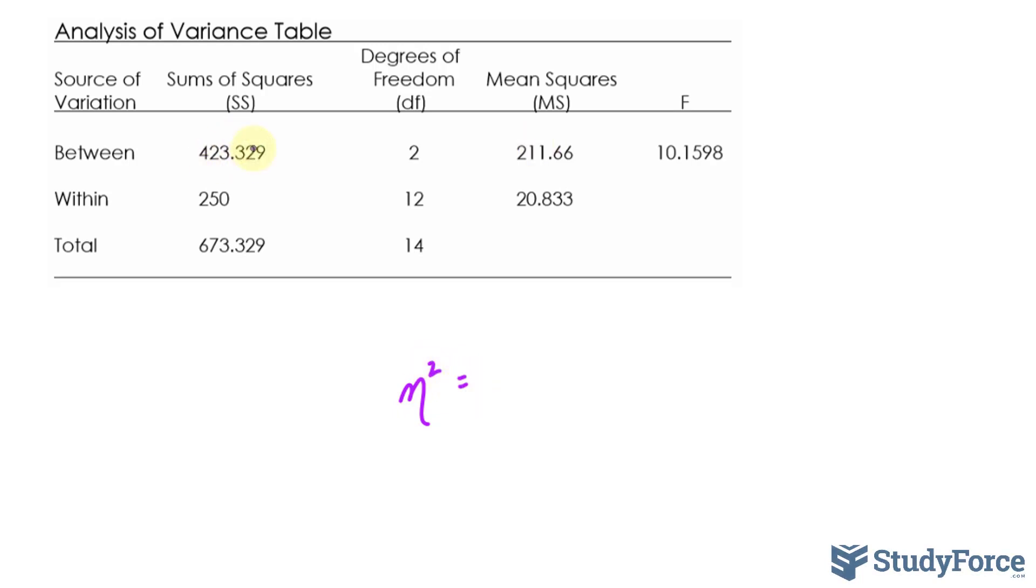The number you see right here, 423.329, over the total, which is 673.329.